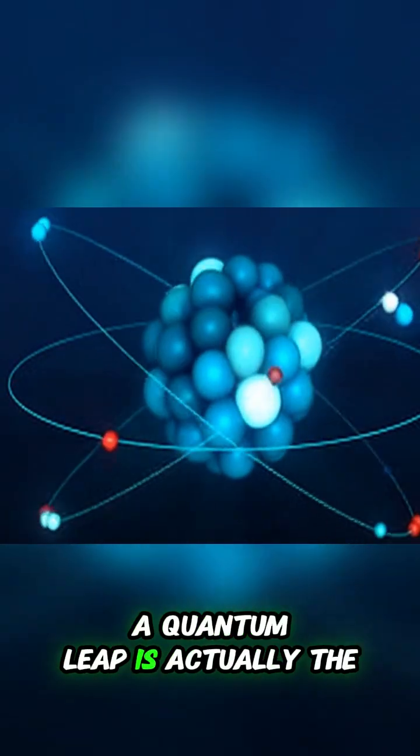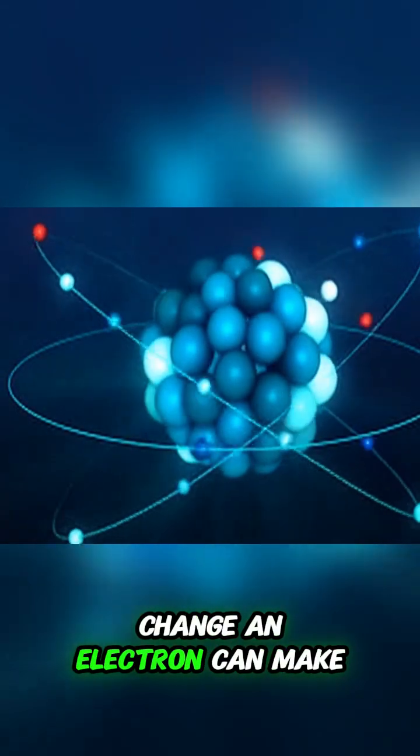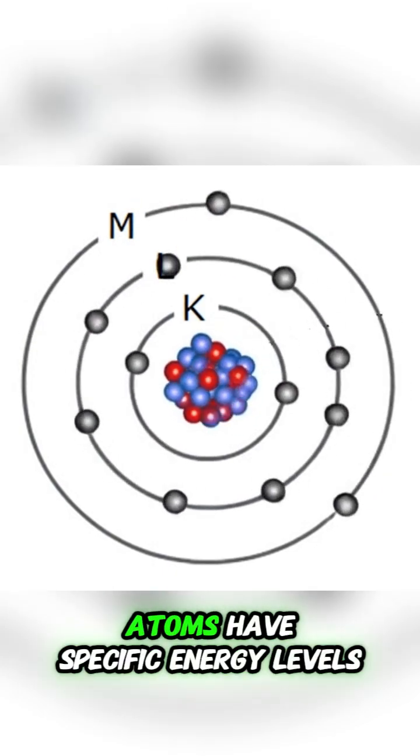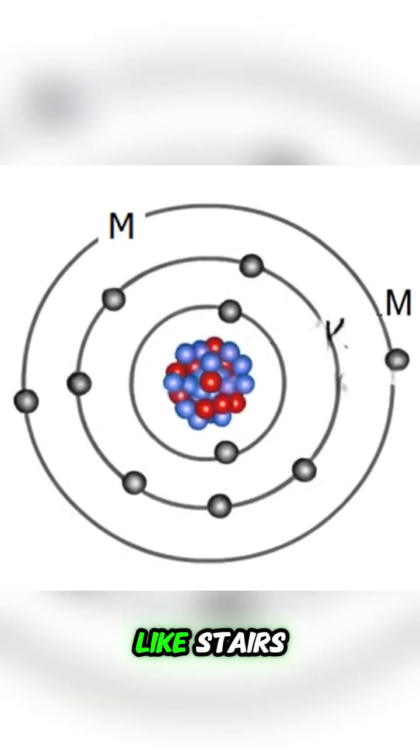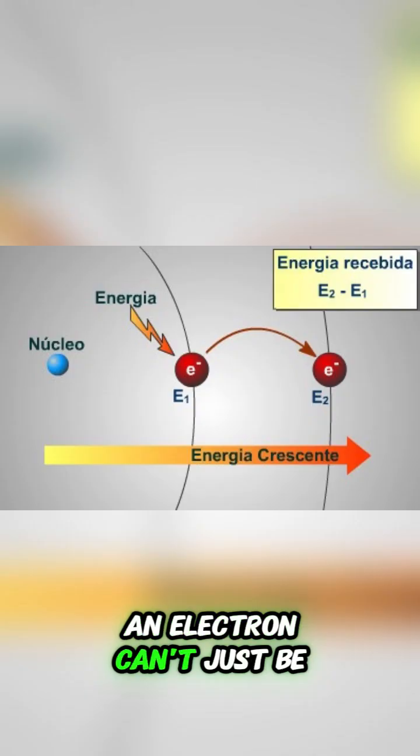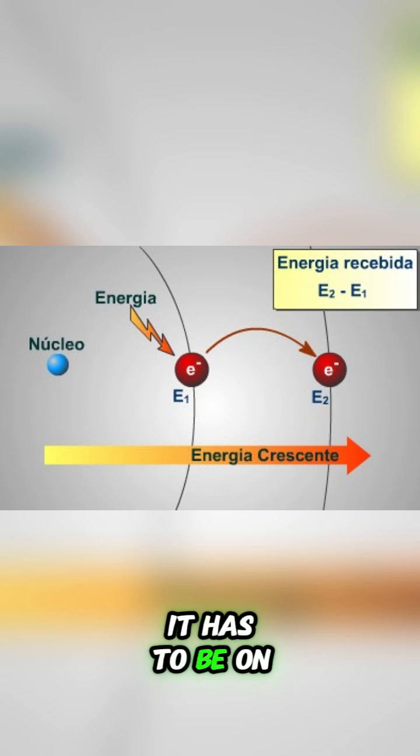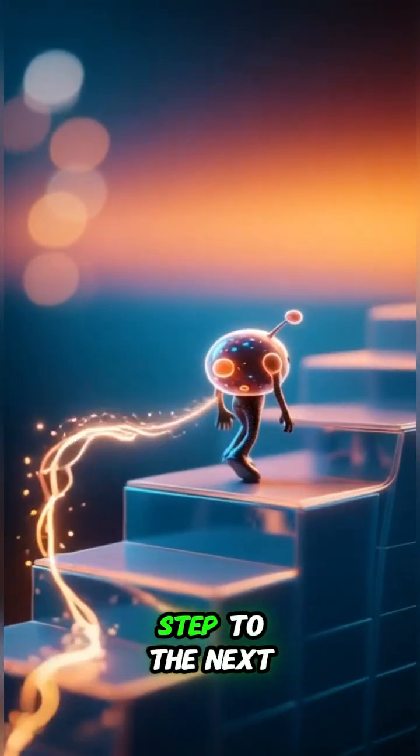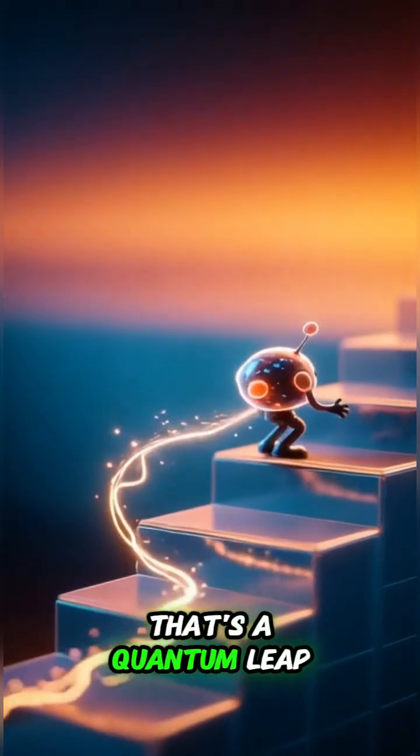In the world of physics, a quantum leap is actually the smallest possible change an electron can make. Atoms have specific energy levels, like stairs. An electron can't just be anywhere in between. It has to be on one step or another. When it moves from one step to the next, that's a quantum leap.